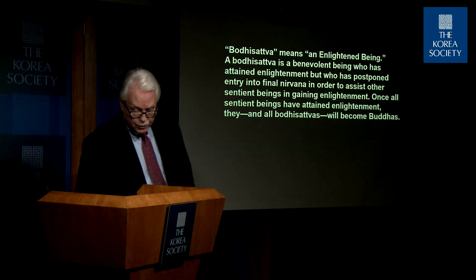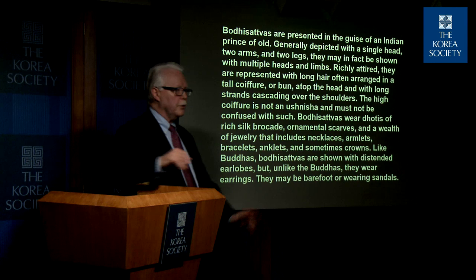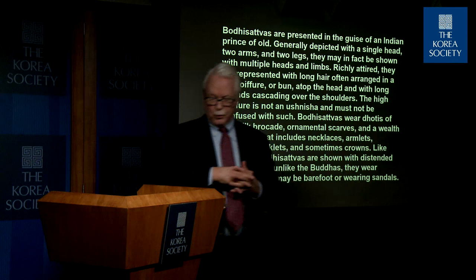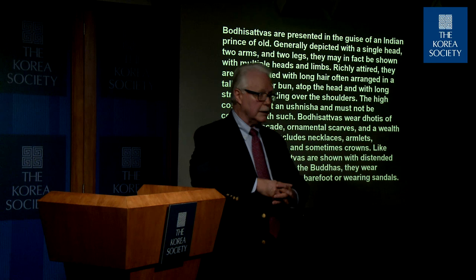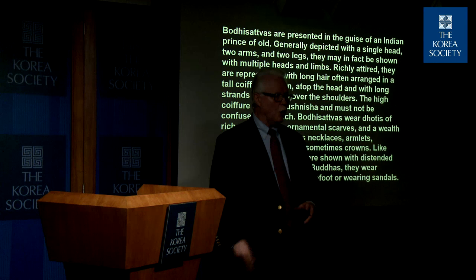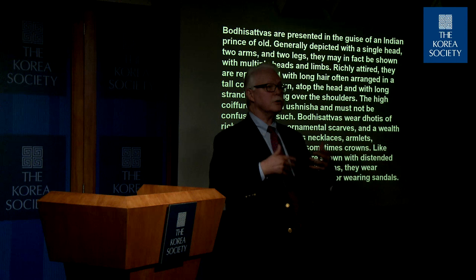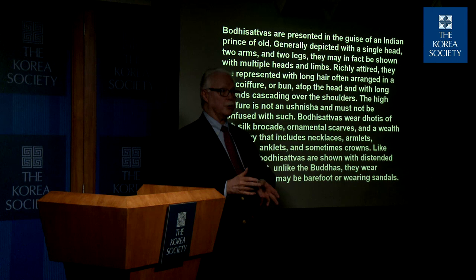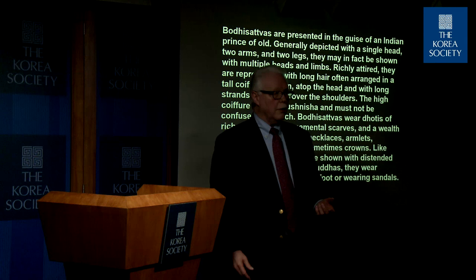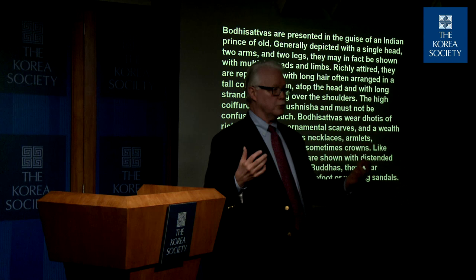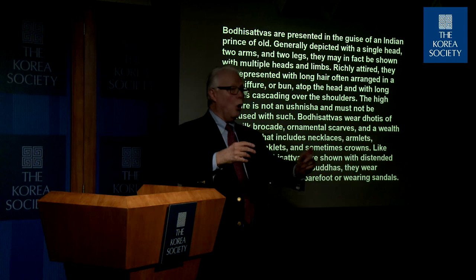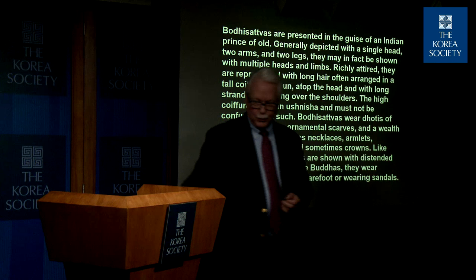So that's what a bodhisattva is. How is a bodhisattva dressed? When the Buddhist theologians came up with the idea, they decided to dress bodhisattvas as if they are princes — in a sense they're spiritual princes following the Buddha's path. They are human beings who wear the robes of a prince: a dhoti, which is a long rectangular piece of cloth wrapped around the waist held in place with a cincture. They have scarves, a wealth of jewelry, and long hair sometimes in a high coiffure on the top of the head or long strands flowing over the shoulders. Just don't mistake a coiffure for the Buddha's ushnisha.